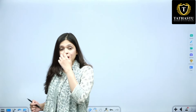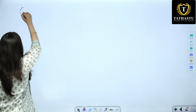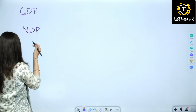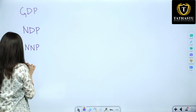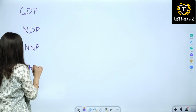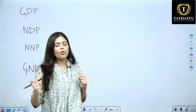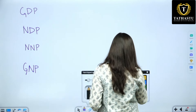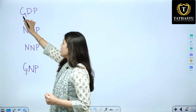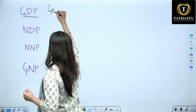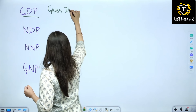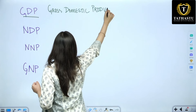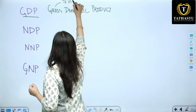There are three methods to find out national income. Let us understand the four key terms today: GDP, NDP, NNP, and GNP. All four are forms of national income, and there is only a difference among the four.